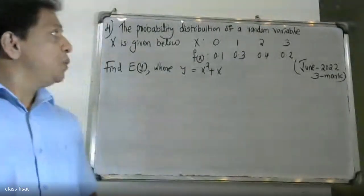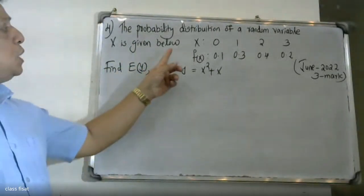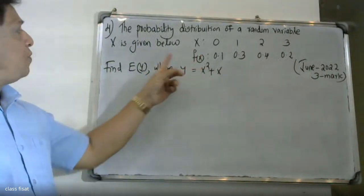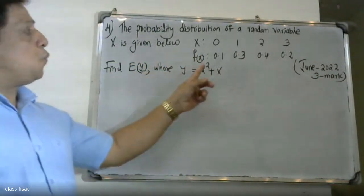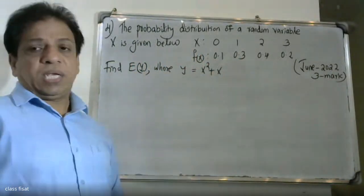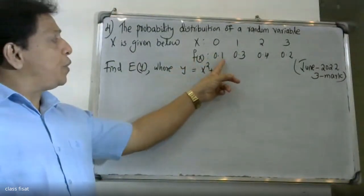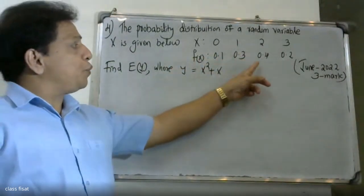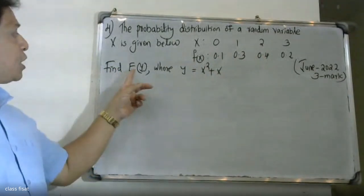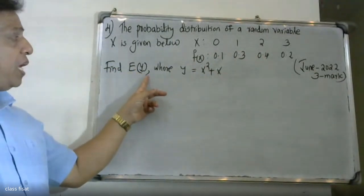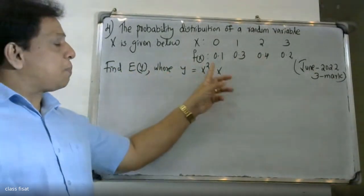Good morning, students. At the university, the probability distribution of random variable X is equal to 0, 1, 2, 3. The corresponding probability f(x) is equal to 0.1, 0.3, 0.2. Find the expectation of Y, where Y is equal to X squared plus X.